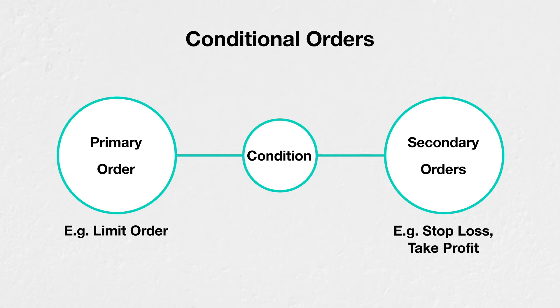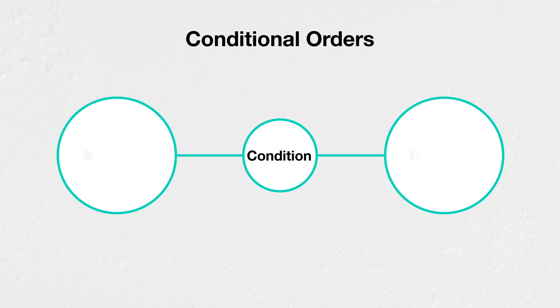The primary order would open a position, and the secondary orders are designed to close that position. The stop-loss order and take-profit order can also be linked to each other in such a way that if one is filled, the other will automatically be cancelled.